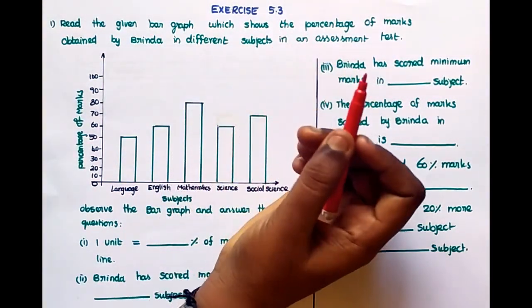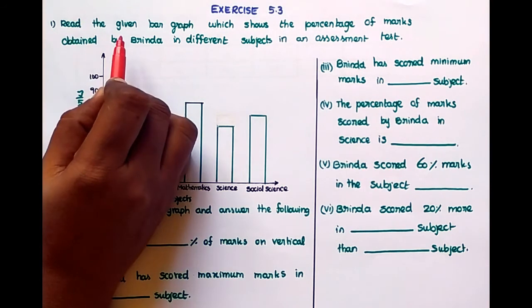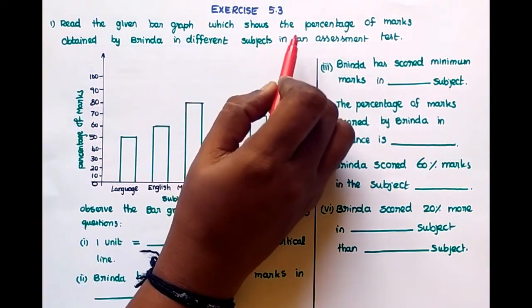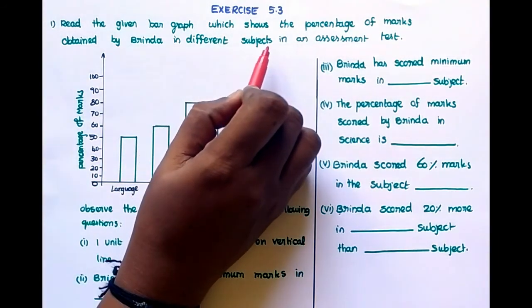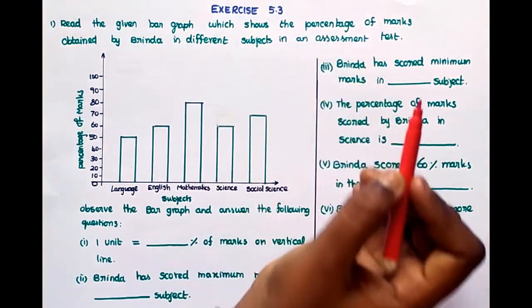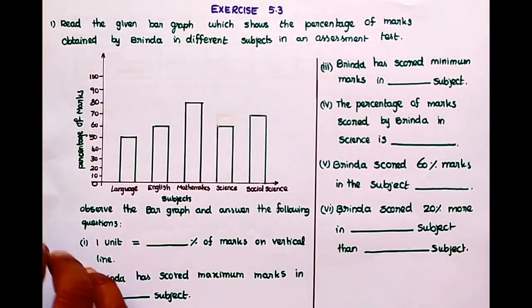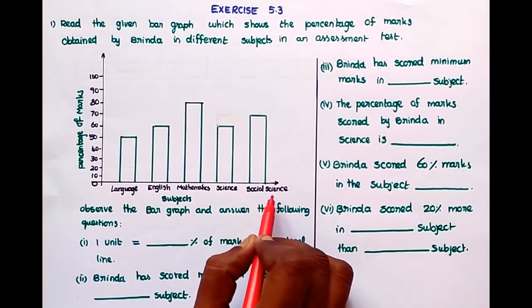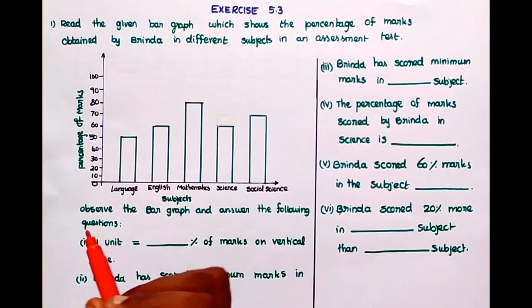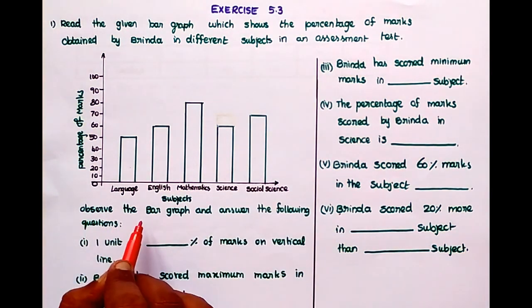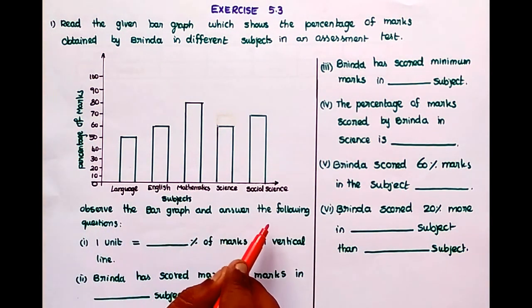Look at this exercise 5.3. First question. Read the given bar graph which shows the percentage of marks obtained by Vrinda in different subjects in an assessment test. These are the subjects and these are the percentage of marks. Observe the bar graph and answer the following.